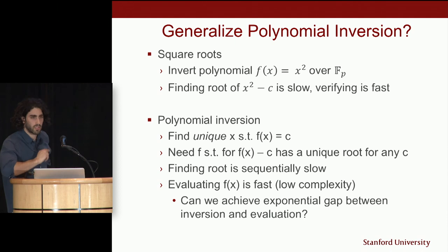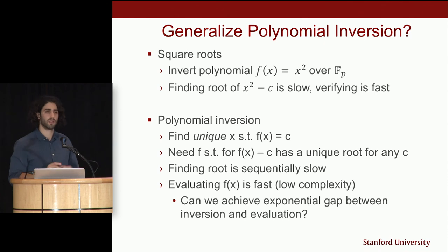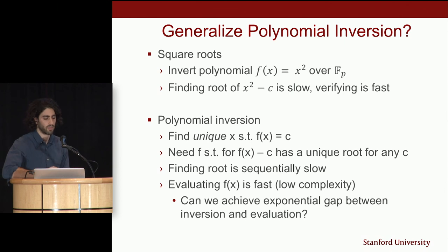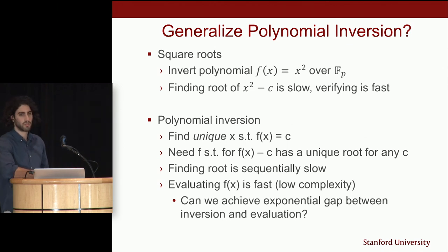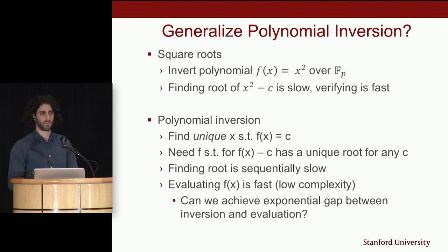Generalizing: square roots modulo a prime are an example of inverting a polynomial — finding a root of x² − c is slow, but verifying is fast because you can evaluate the polynomial efficiently. This motivates the question: can we find other polynomials where there is a unique x such that f(x) = c, finding the root is sequentially slow, evaluating the polynomial is fast, and we can even achieve an exponential gap between inversion and evaluation?